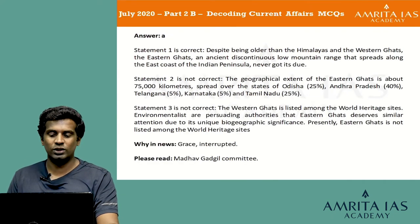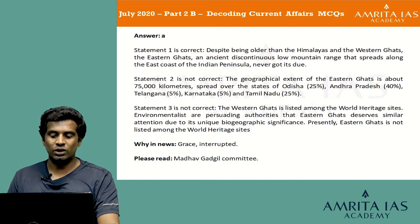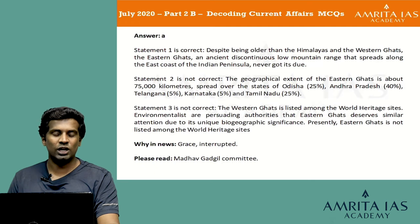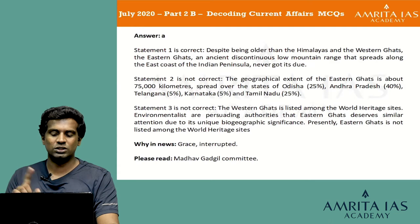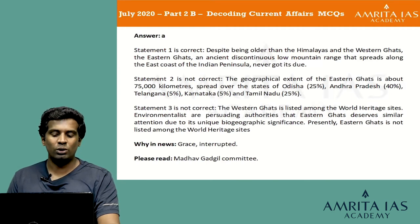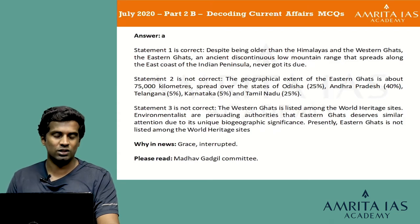Statement 1 is correct — despite being older than the Himalayas and the Western Ghats, the Eastern Ghats, an ancient discontinuous low mountain range along the east coast of the Indian Peninsula, never got its due. Statement 2 is not correct because the Eastern Ghats spreads about 75,000 km over Odisha, Andhra Pradesh, Telangana, Karnataka and Tamil Nadu. Statement 3 is not correct because it is the Western Ghats that is listed among World Heritage sites, while environmentalists are advocating for the Eastern Ghats to receive similar recognition.